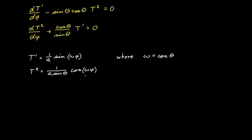What you'll find, and you can do this on your own, you can substitute these values into these two expressions and see that it satisfies both of these equations. You can also see that these forms give us the proper initial conditions. When phi is equal to 0, T1 is equal to 0. When phi is equal to 0 here, T2 is equal to 1 over A sine theta.